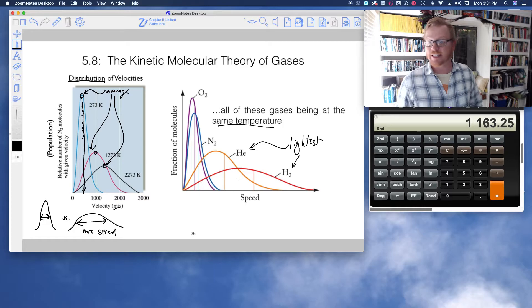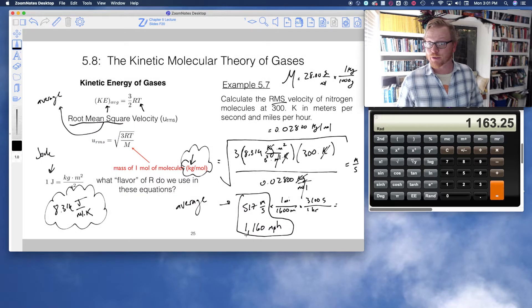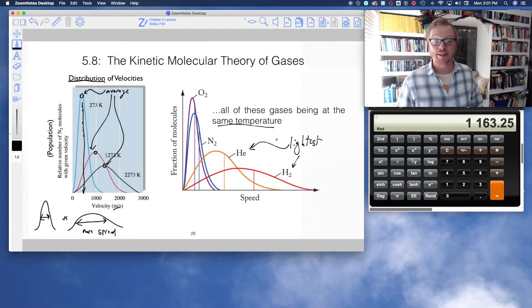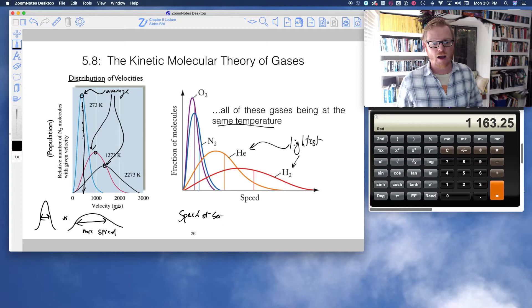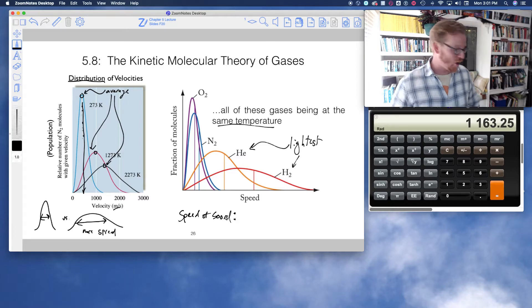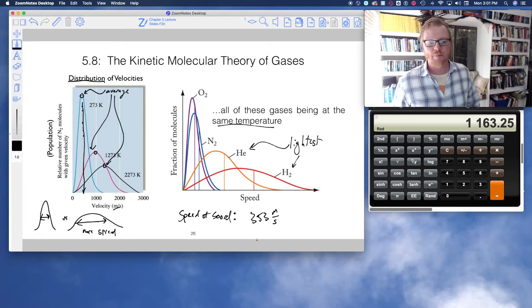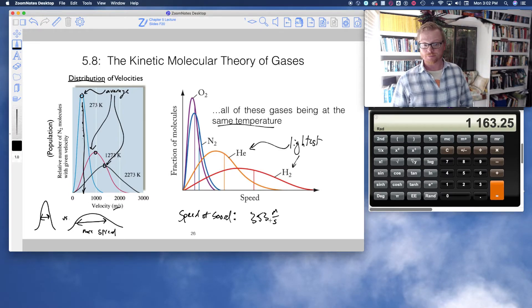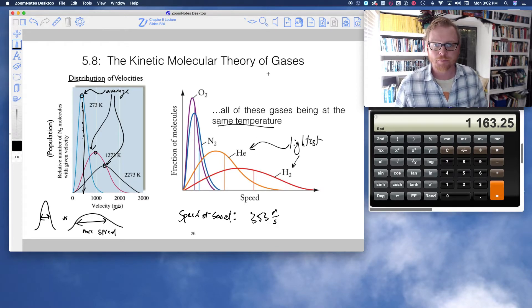Well, now, getting into the significance of this number, this 517 meters per second. Well, as it turns out, the speed of sound, the rate at which sound travels at atmospheric pressure is a mere 353 meters per second. But look at all these velocities, dude. They're way higher than that. So what is the significance of this? Well, the significance is the following.